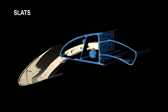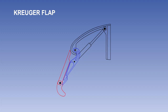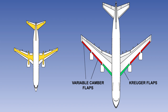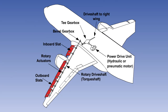Wing leading edge devices may consist of slats, Kruger leading edge flaps, or variable camber leading edge flaps, or some combination of these. The Boeing 747, for instance, uses Kruger flaps on the inboard section of the wing leading edges and variable camber flaps for the outboard, while the Boeing 737 has inboard leading edge Kruger flaps and outboard slats. Whenever a mix is used, the Kruger flaps will invariably be fitted closest to the wing root. Leading edge flaps and slats are operated by hydraulic power or by air turbine motors, and are normally sequenced to operate with the trailing edge flaps.